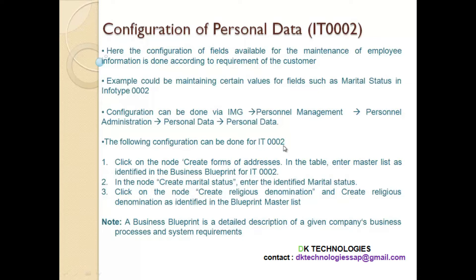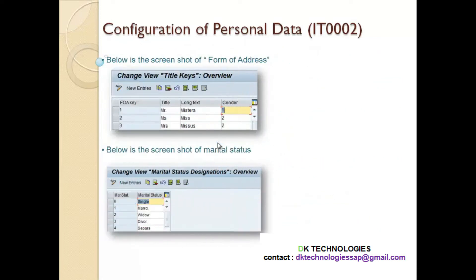Here I've shown some steps on how to configure info type 2. When I say 'configure,' it's the back end — what you configure in the back end will be shown in the front end in the info type. The back-end configuration includes things like 'Form of Address,' which covers titles like Mr., Mrs., Miss. These will be shown in info type 2. You also configure marital status here.